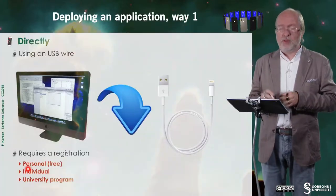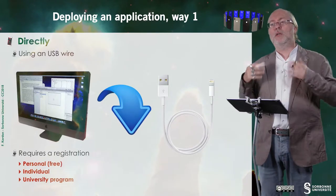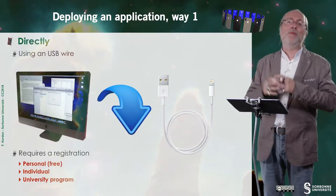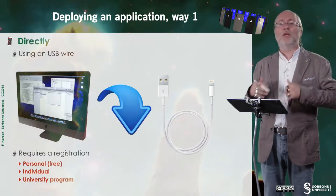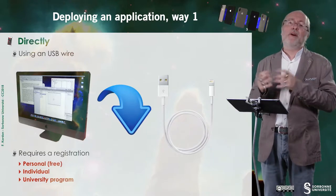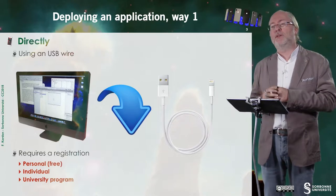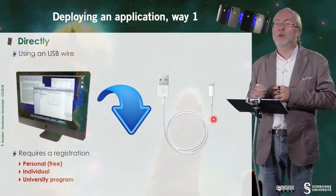You also have what they call individual registration. Typically you are a developer, you want to push some applications on the App Store, and you register as an individual. And you also have a variant of an individual, we'll see later, that is the company. And you have the university program — this is an agreement between Apple and a given institution, a school or university — and so it allows the students to deploy applications on their devices, on the devices of the university, thanks to a wire.